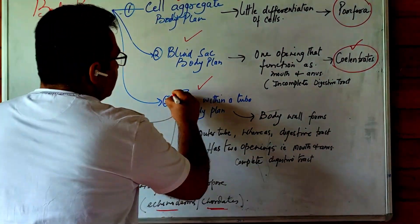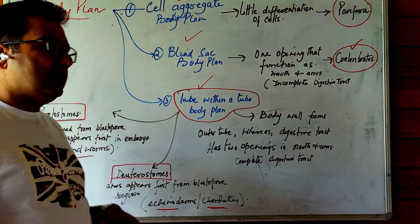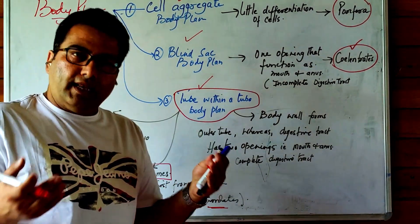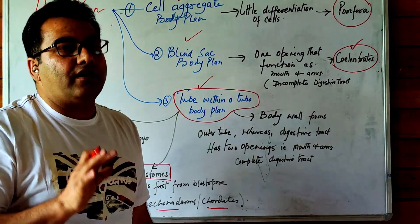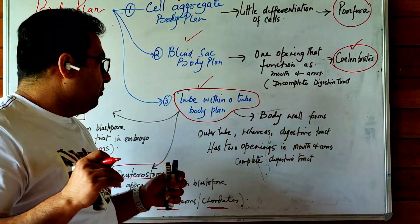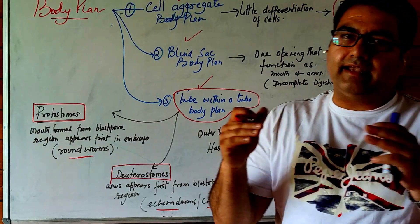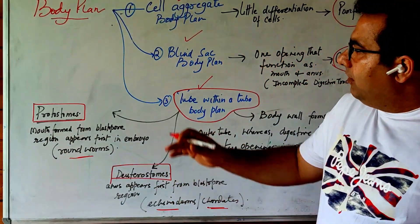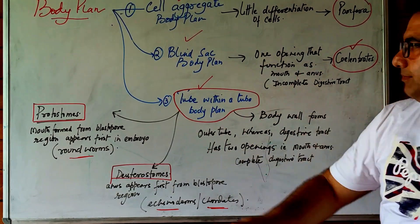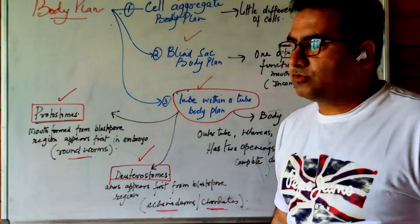The third plan is the tube within a tube body plan. The body wall forms the outer tube, while the alimentary canal forms the inner tube — hence the name. It has two openings: one acting as the mouth and the other as the anus. On this basis, organisms are categorized as either protostomes or deuterostomes.